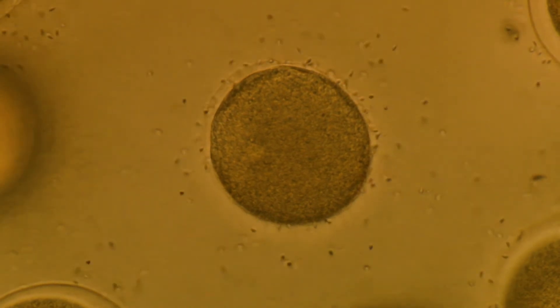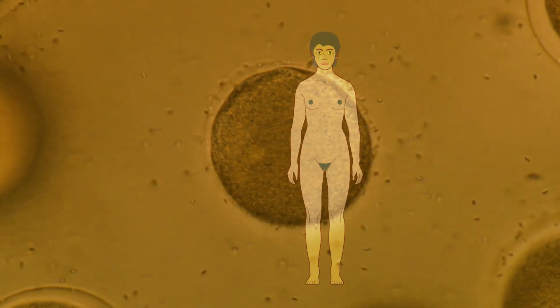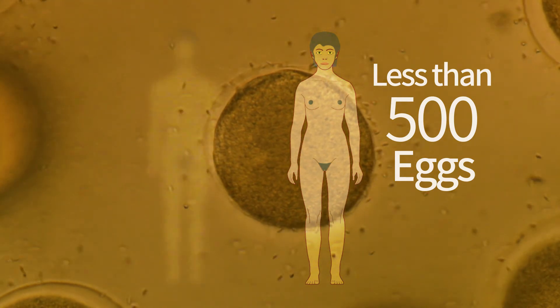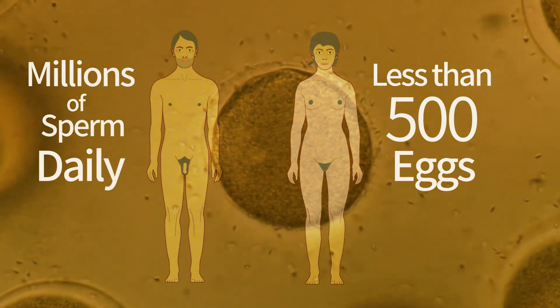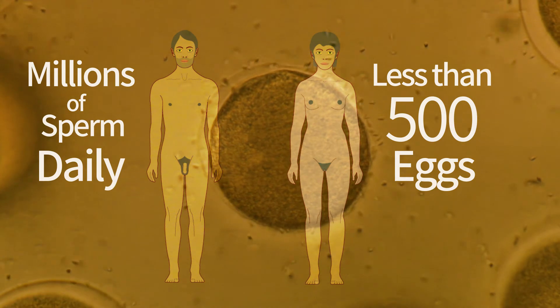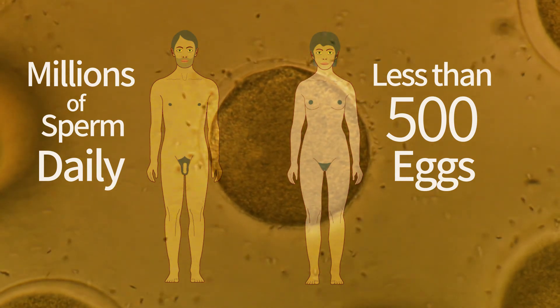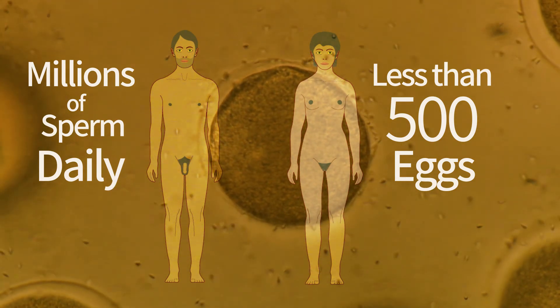For example, women will produce no more than 500 mature eggs during the course of their fertile years. Men, in contrast, produce many millions of sperm cells every day. In the following videos, we will describe in detail how eggs and sperm are produced.